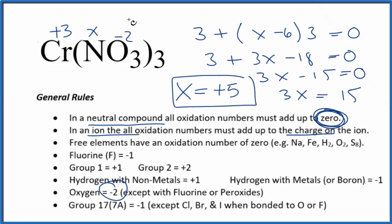Since X equals positive 5, nitrogen has a plus 5 oxidation number. That's the oxidation number on each nitrogen in chromium(III) nitrate.